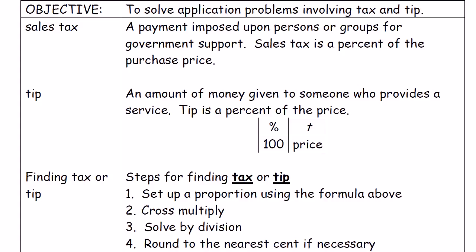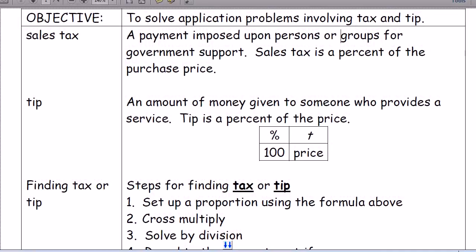In this video we're going to talk about how to find tax, tip, and discount of a price, and we're going to do this with a proportion box. First, let's look at what tip is. A tip is the amount of money given to someone who provides a service, like a waiter. A tip is usually a percent of the price — a small part of the price.